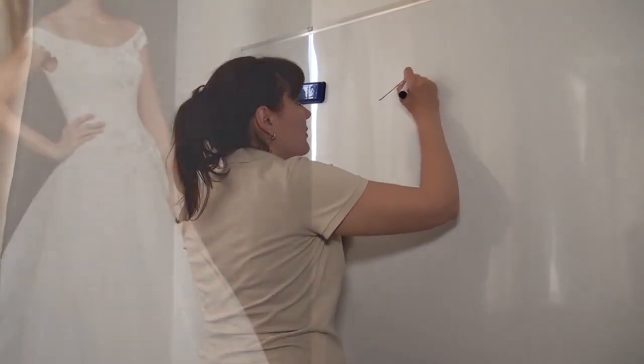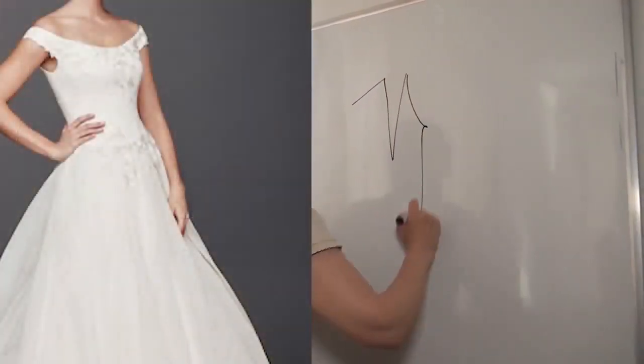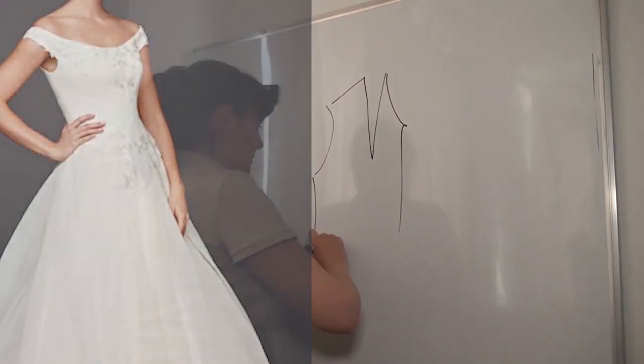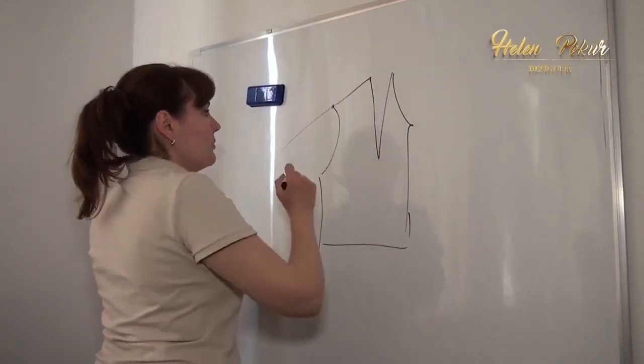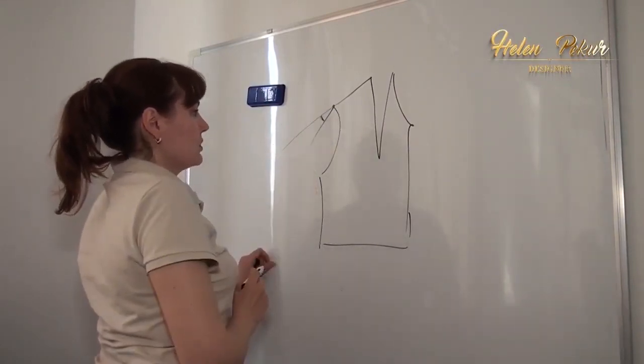For this off-shoulder sleeve, I make the next steps. First, lengthen the shoulder line. Then I draw an angle of 20 degrees from the shoulder point.